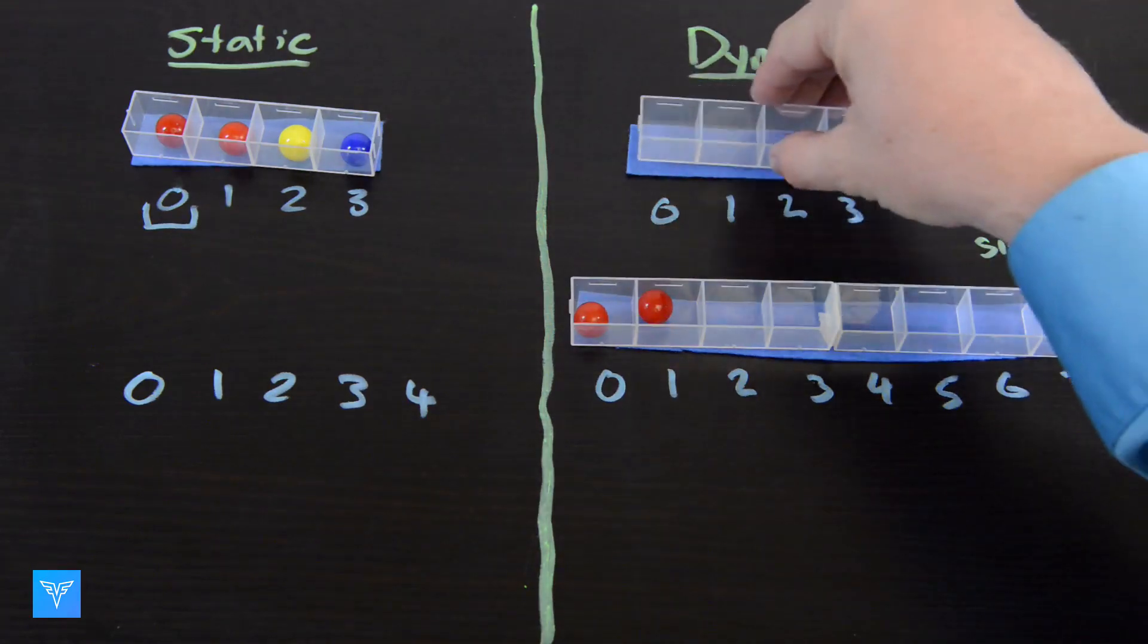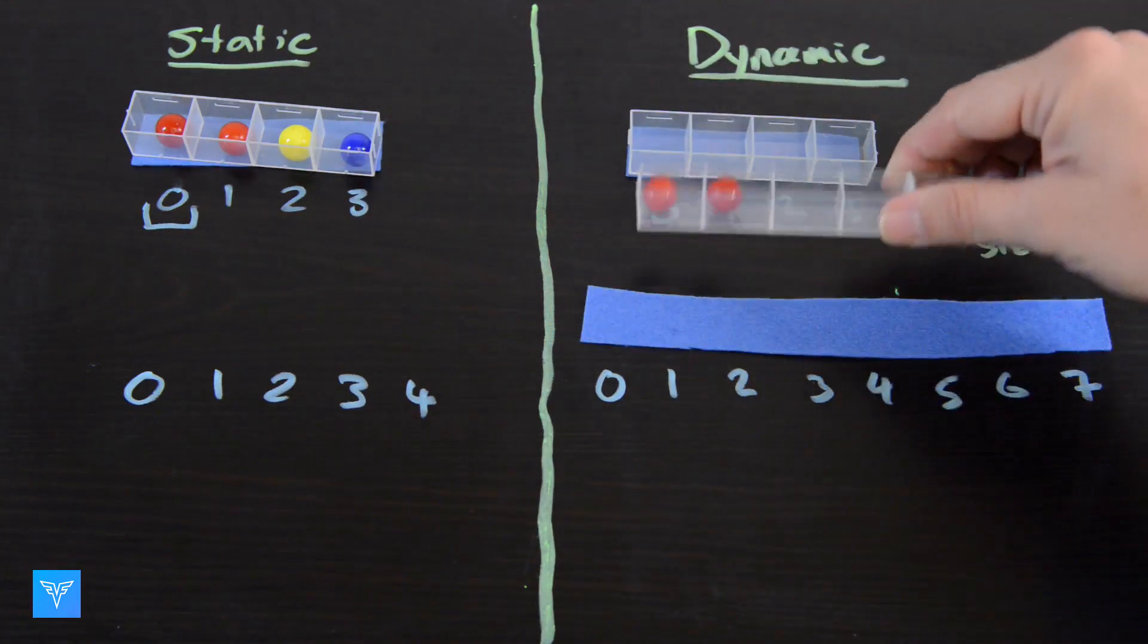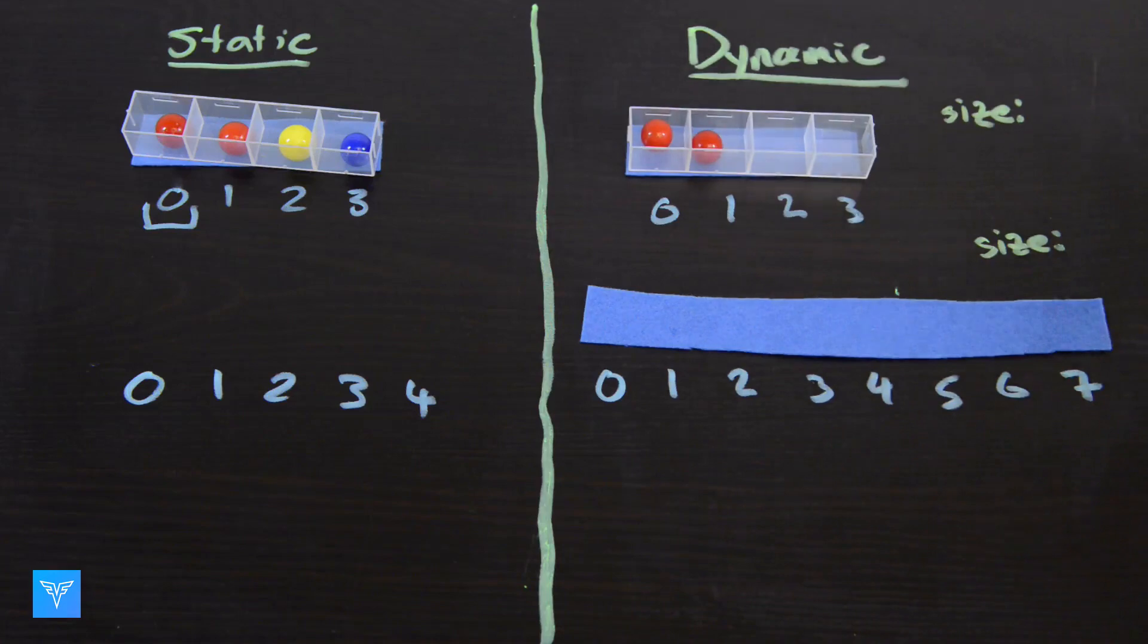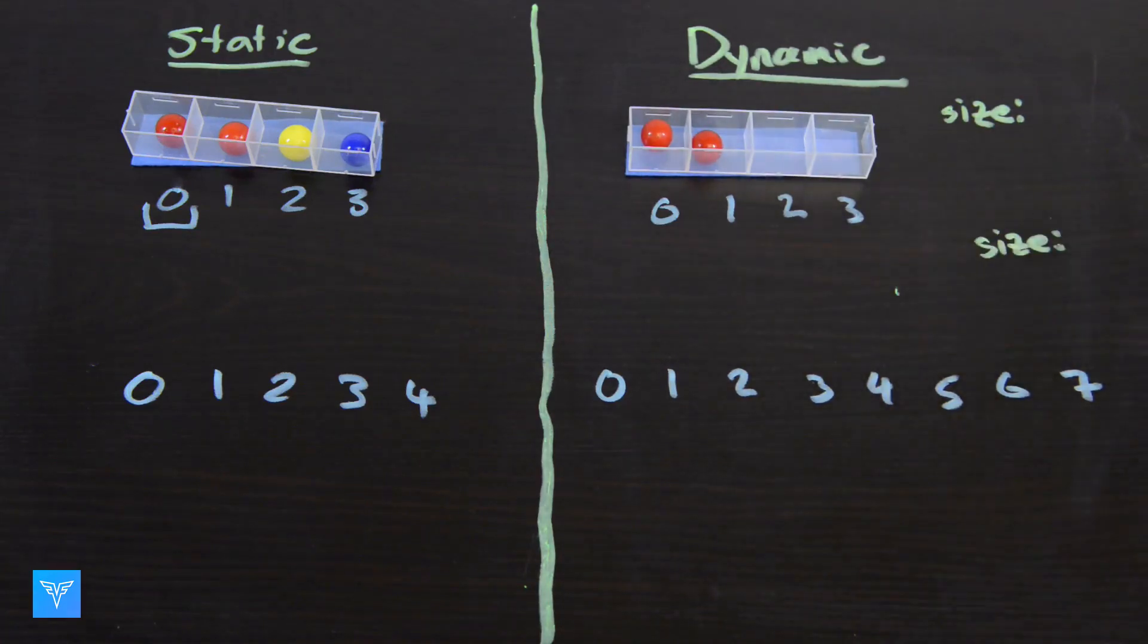The advantage of using a static array is that we only use as much memory as we need. The advantage of a dynamic array is that we're able to add and remove elements quickly.